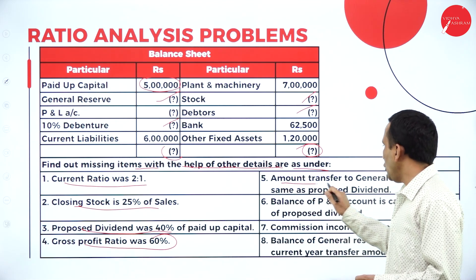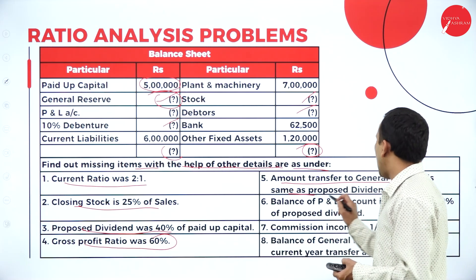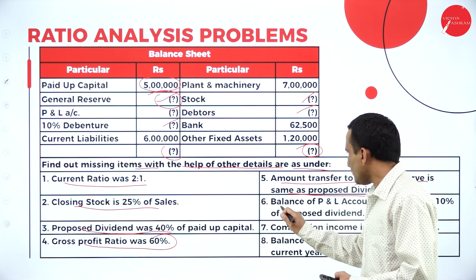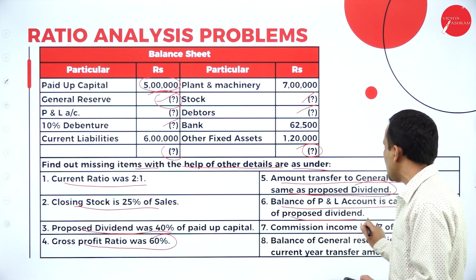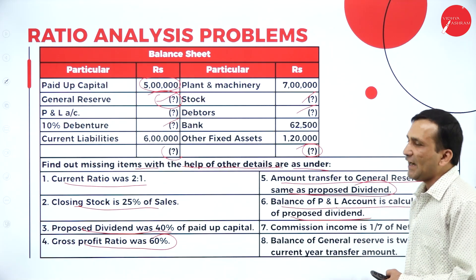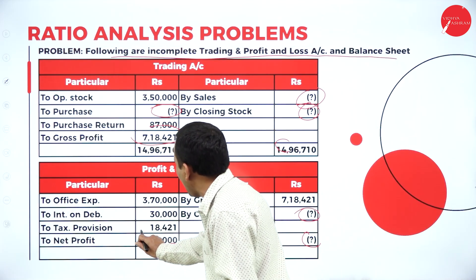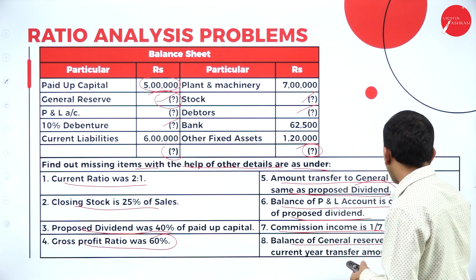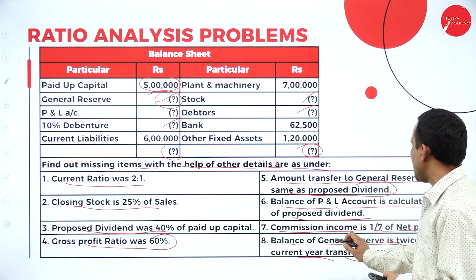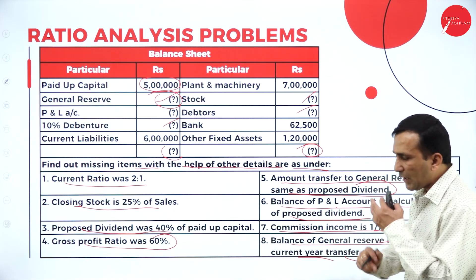Moving to the fifth adjustment: the amount transferred to general reserve is a proposed dividend — the same proposed dividend we calculate based on paid-up capital needs to be treated as the general reserve transfer. The balance of the P&L account is calculated as 10% of proposed dividend. Commission income is one-seventh of the net income, which is given in the question as 3,50,000. The balance of general reserve is twice the current year transfer amount.